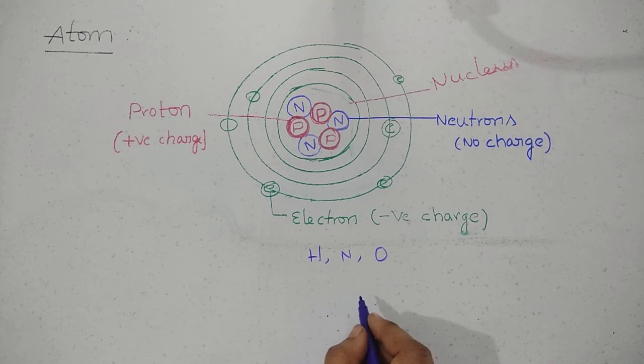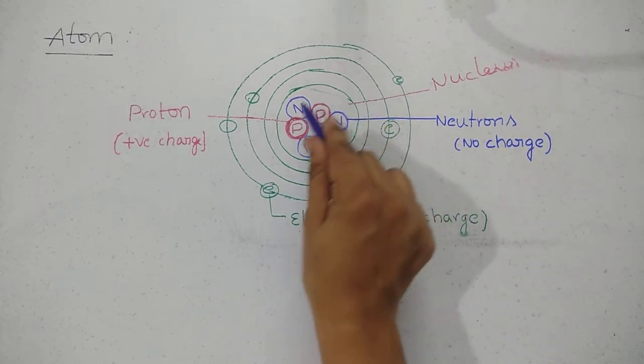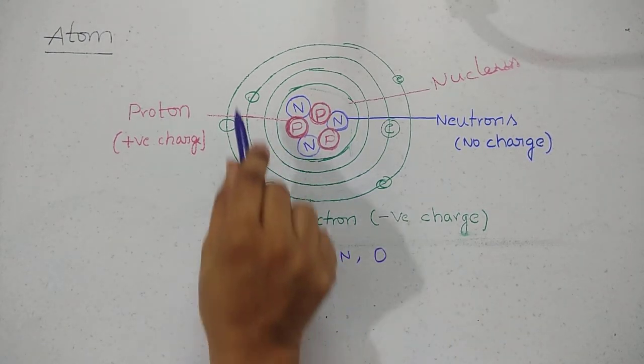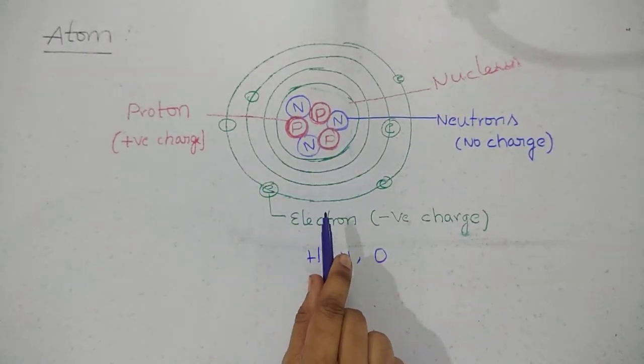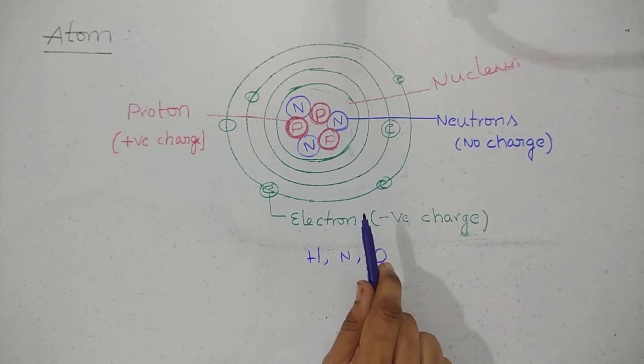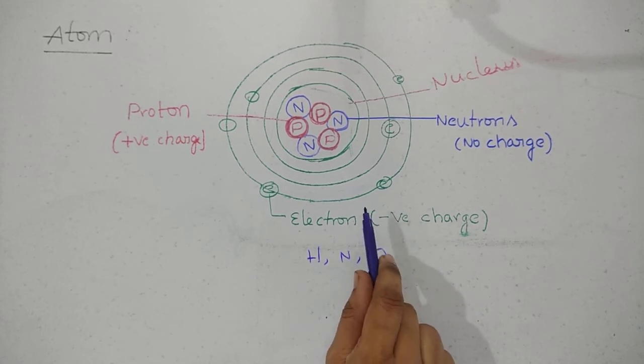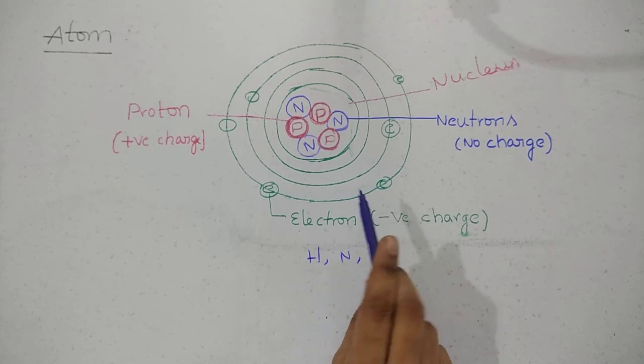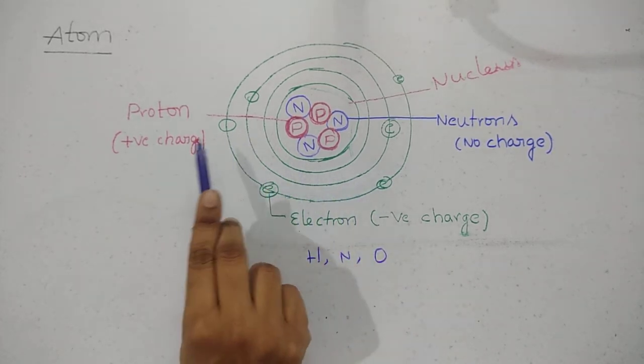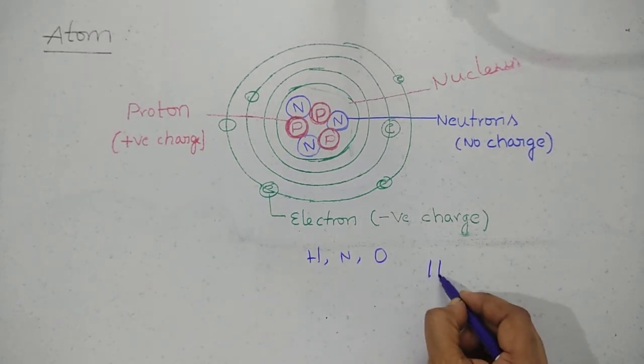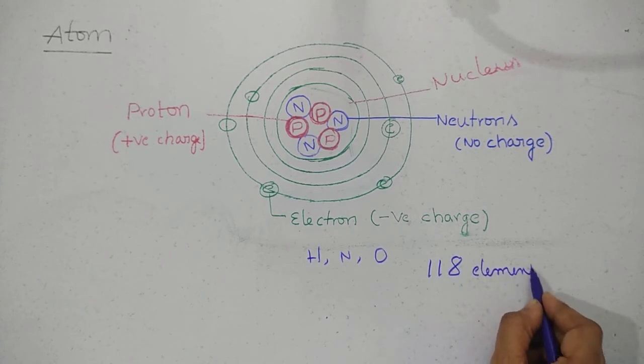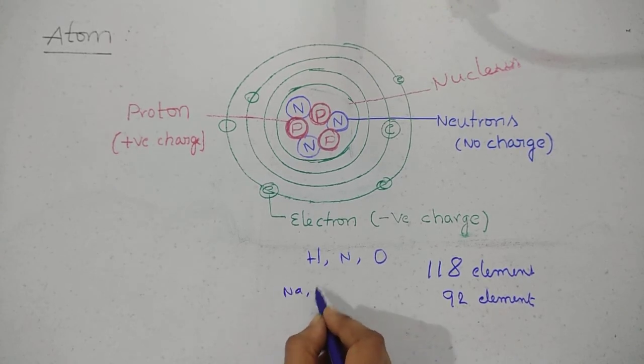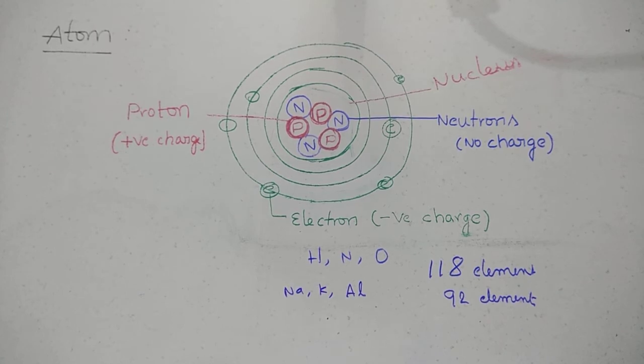The number of protons is the atomic number. Number of protons determine what element it is, and then electrons determine what type of change it can occur. We can see that the number of electrons depends on the number of protons. In periodic table we have 118 elements, 92 elements we have in nature abundant, like gold, diamonds, metals like sodium, potassium, aluminum.